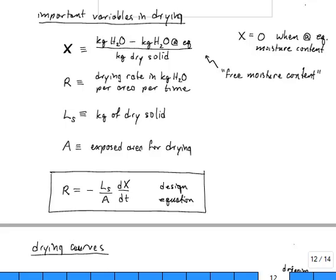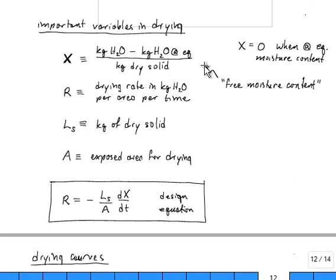The important variables in drying are the amount of water. This is the so-called free moisture content, x. That is the mass of water in the material, minus the mass of water that would be in the material if it was at equilibrium with the surroundings, divided by the mass of dry solids in the material. The other important property here is the rate of drying, R. That is in kilograms of water per area per time.